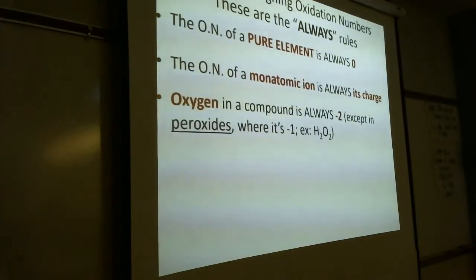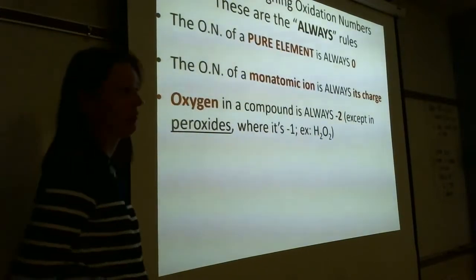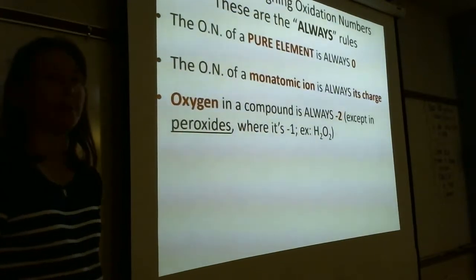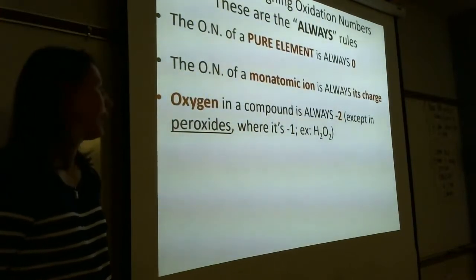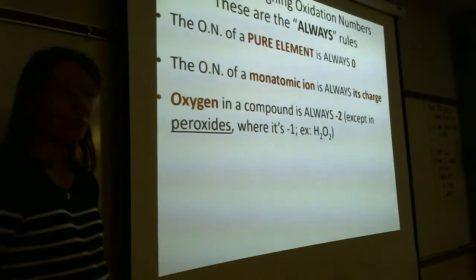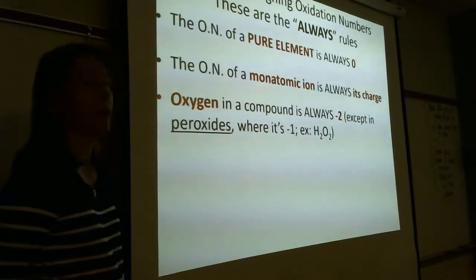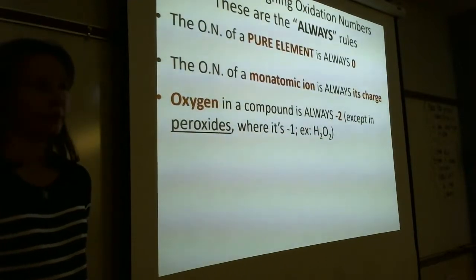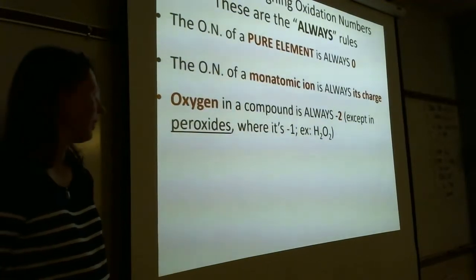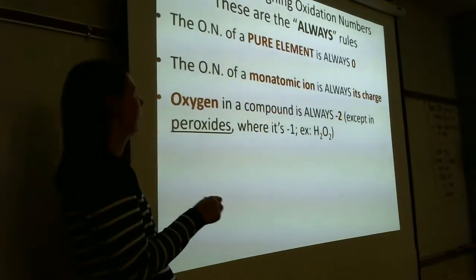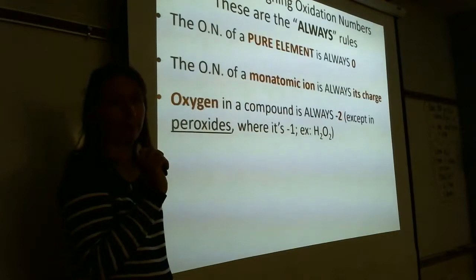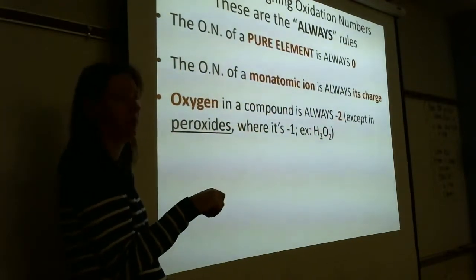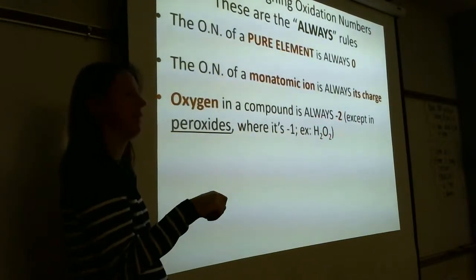Oxygen in a compound is always -2, except in a peroxide. Hydrogen peroxide H2O2 is the only exception you need to know in this class — oxygen is -1 in hydrogen peroxide. In H2O it's -2. O2 as a gas is zero. So distinguish between oxygen in a compound (-2) versus pure oxygen O2 gas (zero).